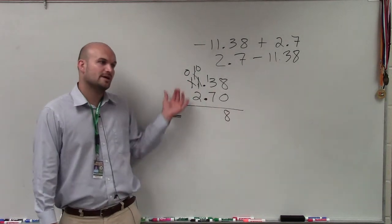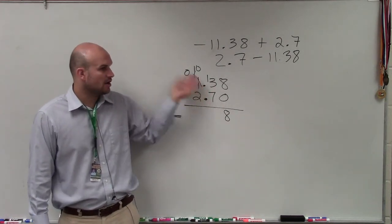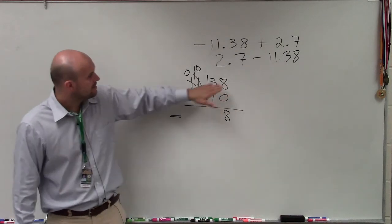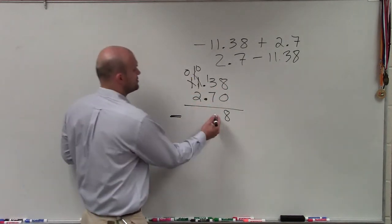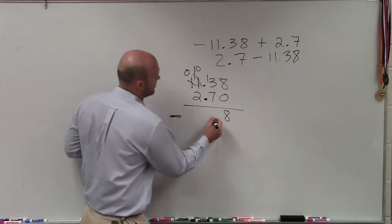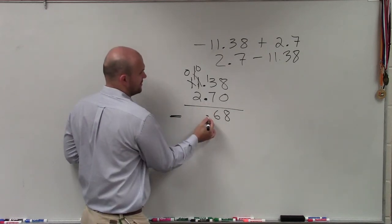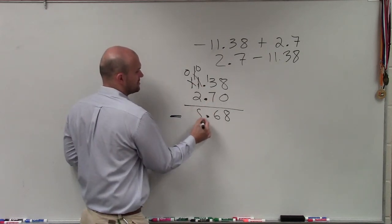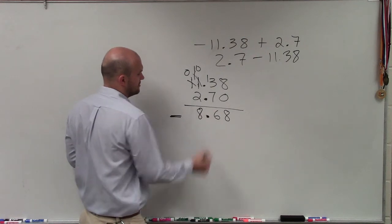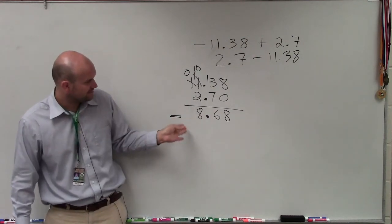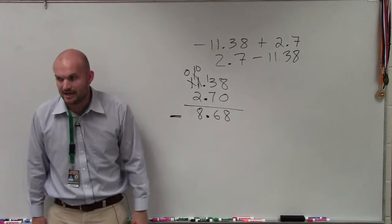Just work all the way to your left for what you need to borrow, and then just keep on working the way right. So now, I have 13 minus 7, which is going to be 6 decimal points. 10 minus 2 is 8. And then, as I already mentioned, 0 minus 0 to that, and then I know that answer is going to be negative.